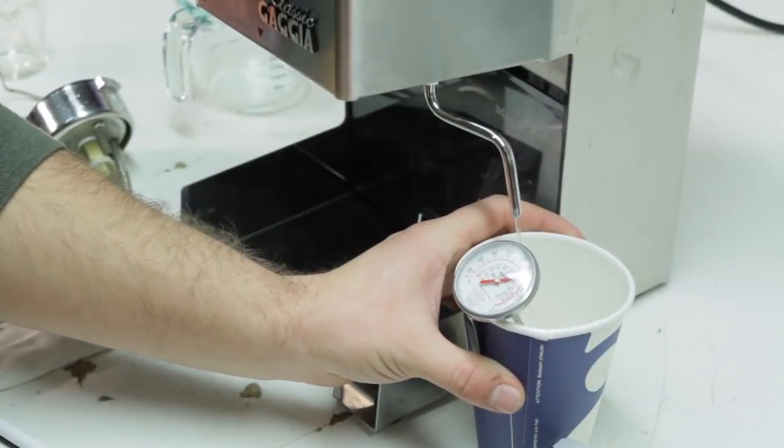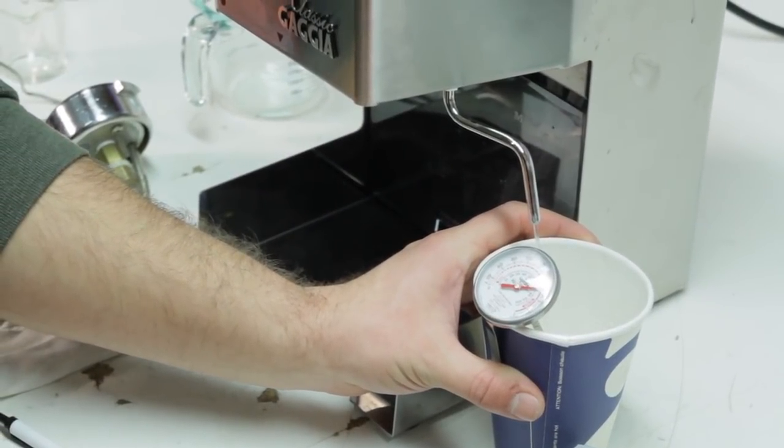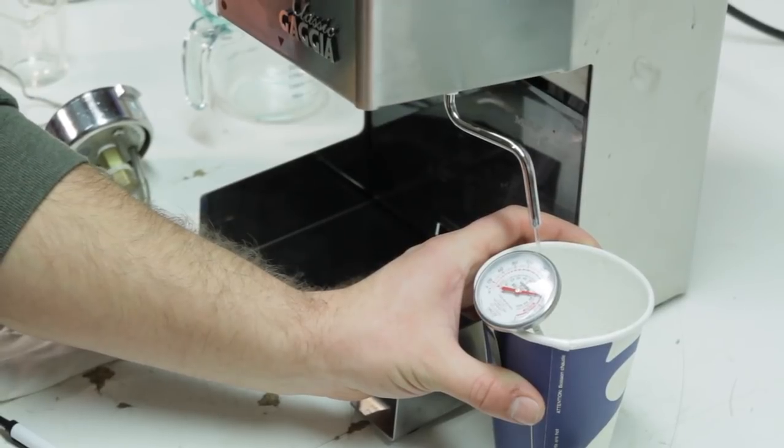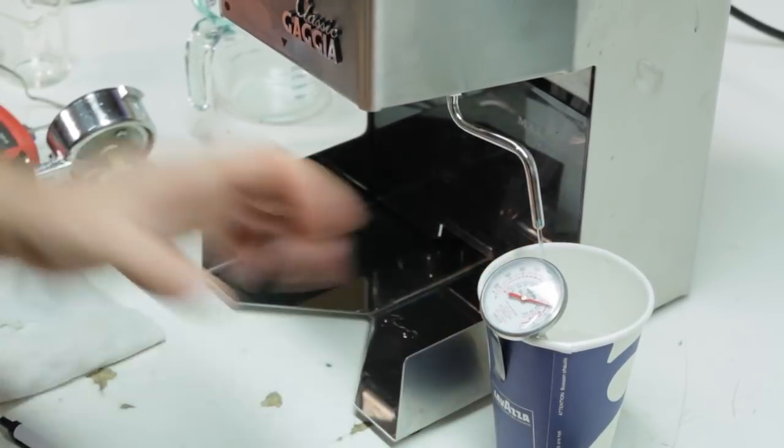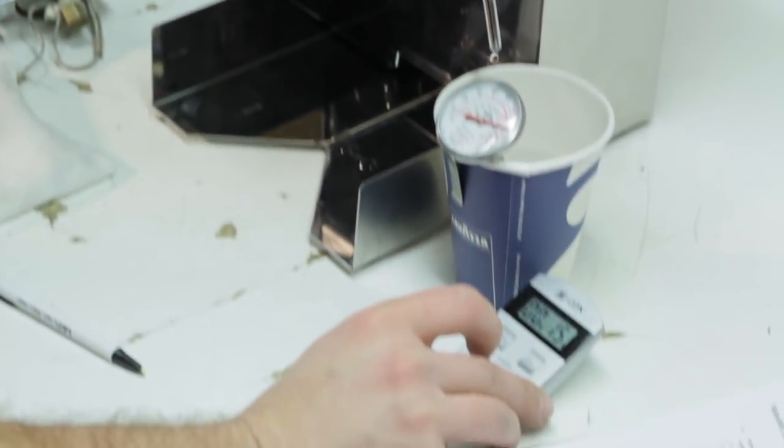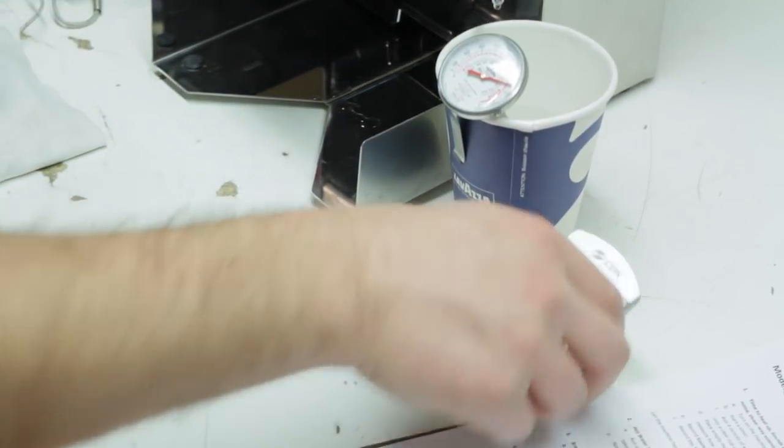Next thing we do, we do what we call a hot water test. We run hot water through the steam wand. We time how long it takes and the temperature. From that, we're checking the volume that the pump will put out and the actual temperature of the boiler. Make sure the thermostats are up to snuff on that one.